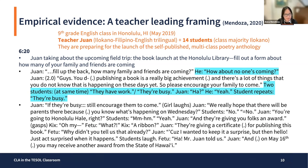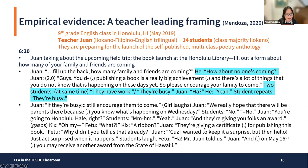Juan says, 'we really hope that there will be parents there because you know what's happening on Wednesday.' Students say no. Juan says, 'you're going to Honolulu Hale, right?' Students say yeah. 'And they're giving you folks an award.' There are gasps. Kicks, an Ilocano boy recently arrived in the US and very academically strong, says 'oh my.' Fetu, a Samoan boy, says 'what?' Kicks says 'a ribbon.' Juan says, 'they're giving a certificate for publishing this book.' Fetu says, 'why didn't you tell us that already?' Juan says, 'because I wanted to keep it a surprise. But just act surprised when it happens.' Students laugh. Juan adds, 'on May 16th, you may receive another award from the state of Hawaii.'